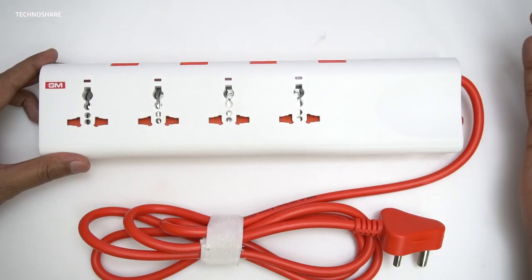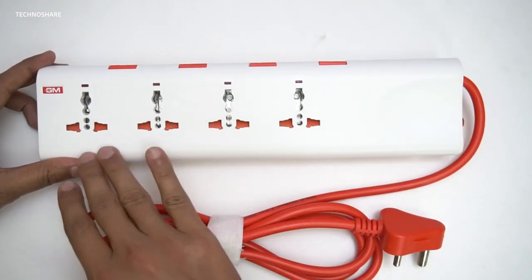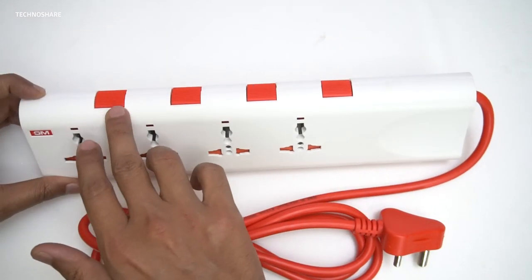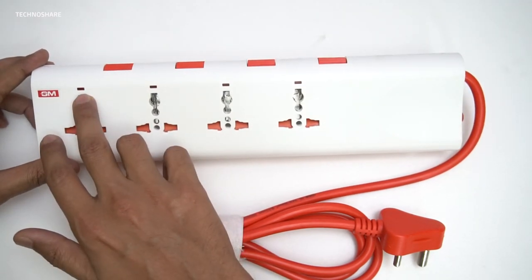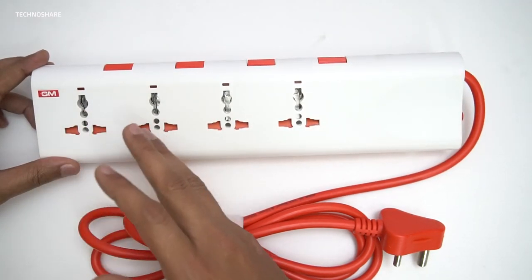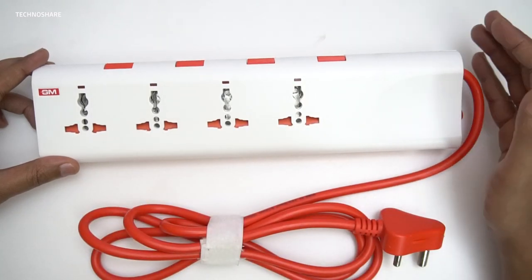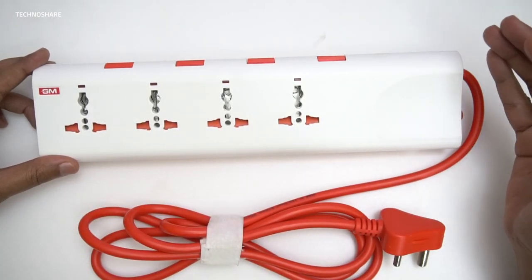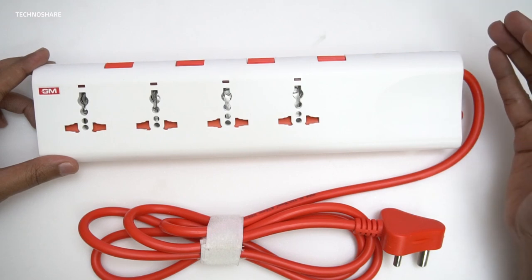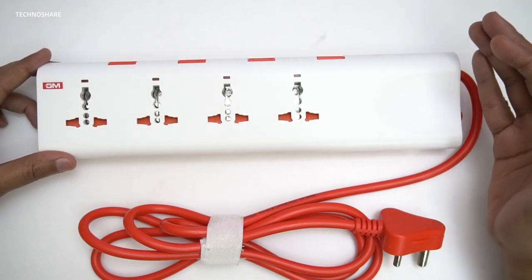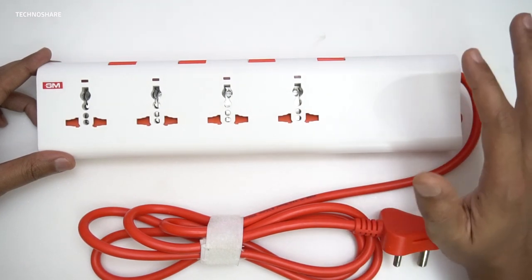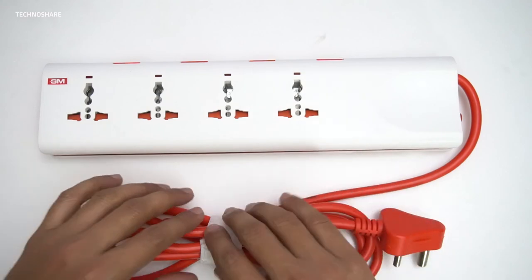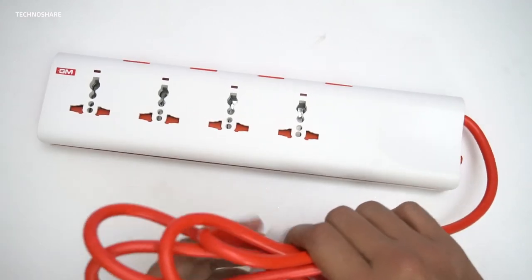Now let's talk about the features to which I was quite impressed. Firstly, each socket can be controlled using the switch above it, and every socket has got a small light just above the socket to indicate if it's on or off. This is a nice feature because I've seen many other surge protectors and extension boxes that have just one switch for all the sockets. Let me just power it on and see how this lights up.